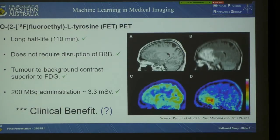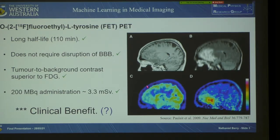Within the last two decades, FET PET has gained a large amount of popularity due to its long half-life, not requiring an on-site cyclotron, and also its uptake within the brain not requiring disruption of the blood-brain barrier. There's a superior tumour background contrast to FDG. An example is shown here — this is an FDG PET image and this is a FET PET image — and hopefully you can see that the uptake within the background is basically night and day, with the hotspot so easily identifiable in FET PET.